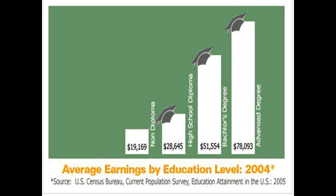Here are some average annual earnings by education level from 2004, from the U.S. Census Bureau. With a high school diploma, average annual earnings were $28,645. With a bachelor's degree, $51,554. Once again, more numbers showing that on average, education pays.